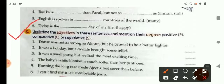you have to underline the adjectives in the sentence and mention their degrees. If it is positive, you write P. If it is comparative, write C. And if it is superlative, write S.